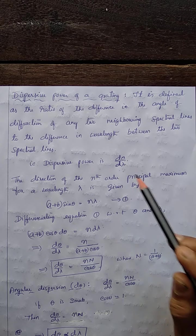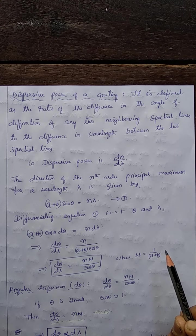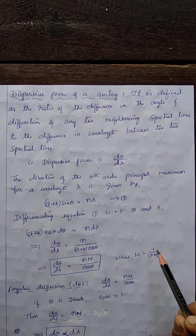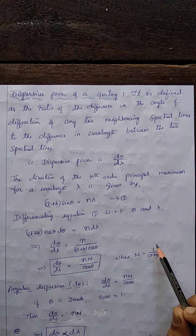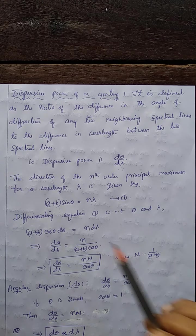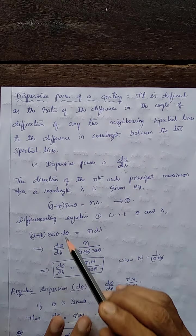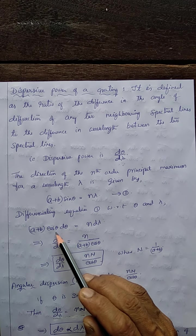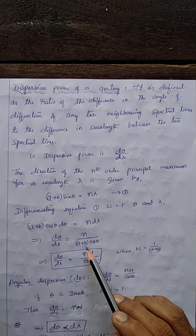To get the expression for dispersive power of a grating, consider the nth order principal maximum of wavelength λ. Suppose we have two spectral lines of wavelengths λ and λ + dλ, with corresponding angles of diffraction θ and θ + dθ. The condition for the nth order principal maximum of λ is: (a + b) sin θ = nλ. Differentiating with respect to θ and λ — both are variables — you get (a + b) cos θ dθ = n dλ, giving dθ/dλ = n / [(a + b) cos θ].